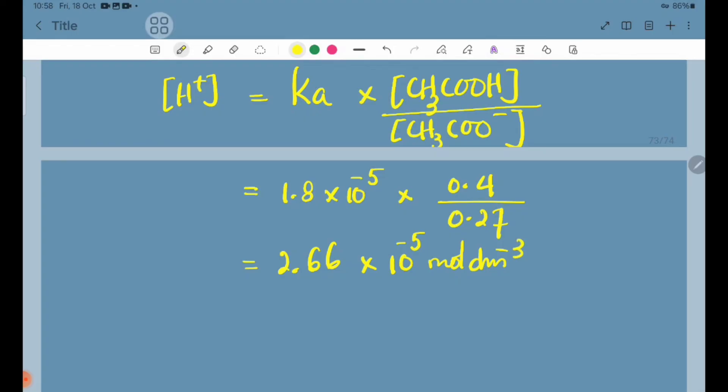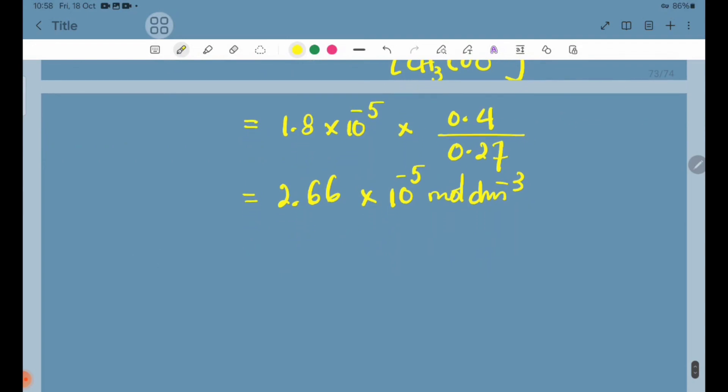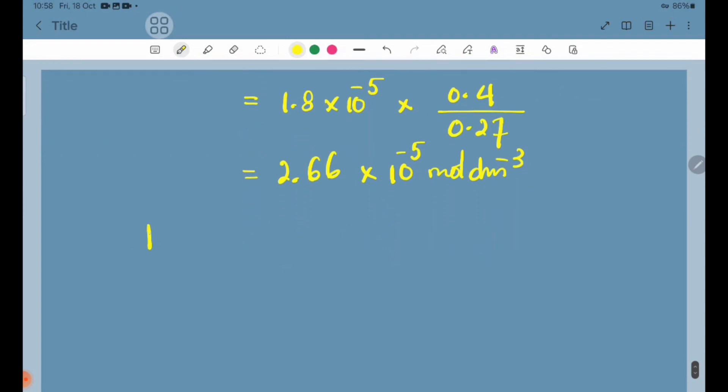pH equals minus log H plus ion concentration equals minus log 2.66 into 10 power minus 5.